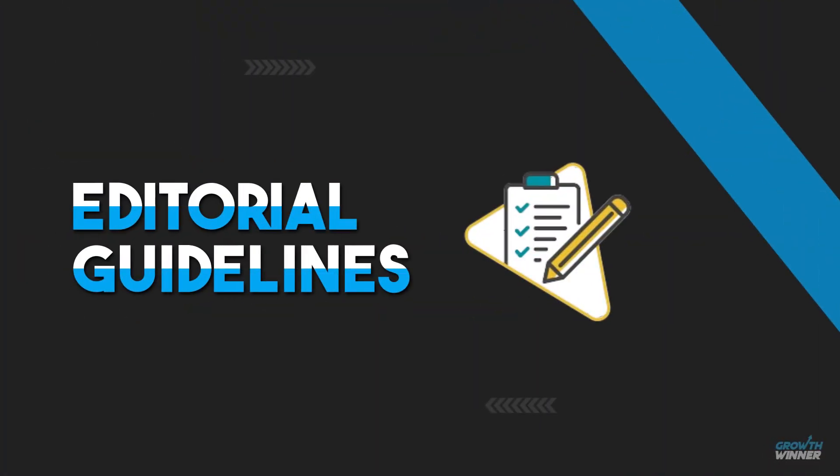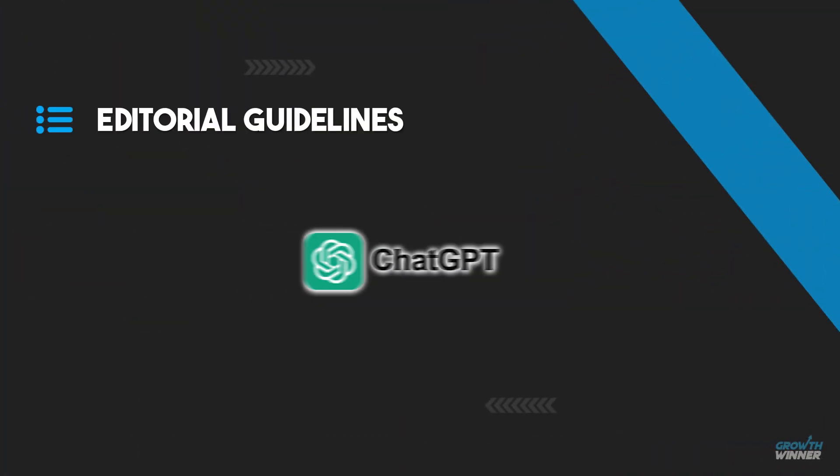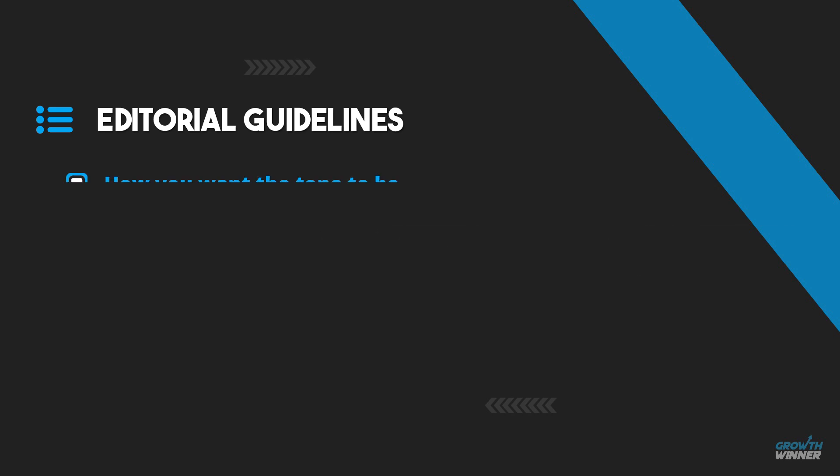This will include writing compelling introductions, detailed body sections, and strong conclusions. But before you even write a word, here is the most important step: editorial guidance. In this step, you instruct ChatGPT on how you want the tone to be, the reading level it should follow, and what to avoid.